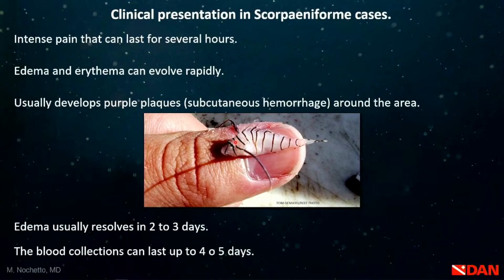How do these cases present? There is intense pain that can last for several hours. Following the pain, there is redness and edema. Patients may develop purple plaques — subcutaneous hemorrhage — not necessarily at the puncture site, but sometimes a few inches away; for instance, if the wound is in the hand, hemorrhage may appear around the forearm. Swelling usually resolves in two to three days, and blood collections may last four to five days.